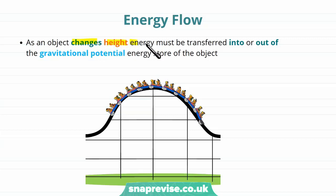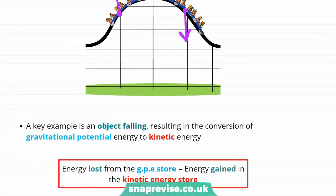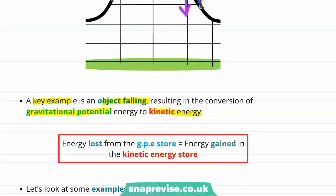As an object changes height, energy must be transferred into or out of its gravitational potential energy store. People going up a roller coaster hill gain gravitational potential energy; those going down have energy transferred out. A key example is a falling object, where gravitational potential energy is converted into kinetic energy — the ball speeds up because it gains more and more kinetic energy. The energy lost from the gravitational potential energy store equals the energy gained in the kinetic energy store.